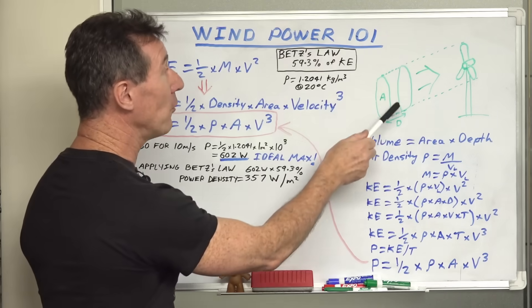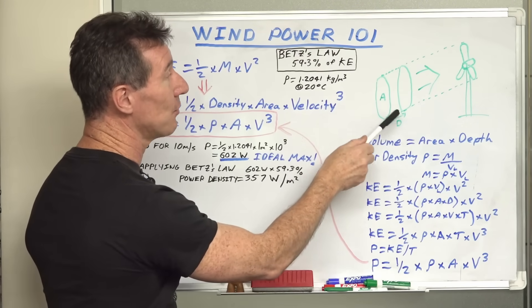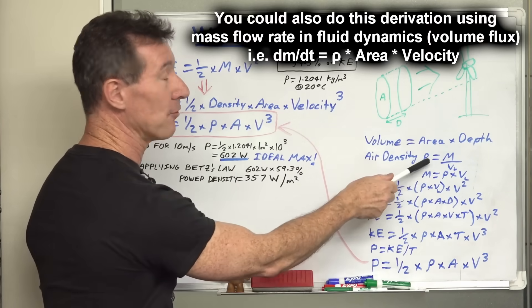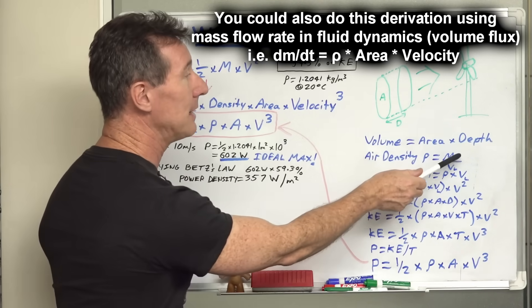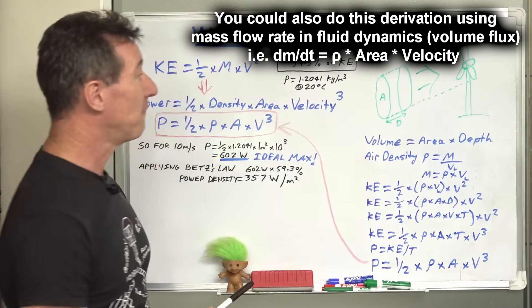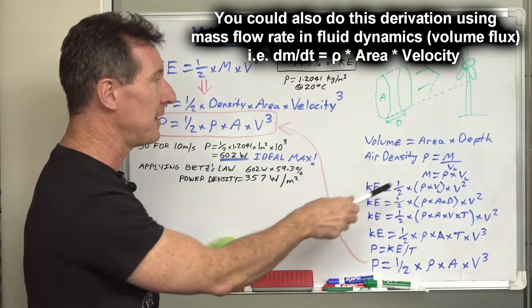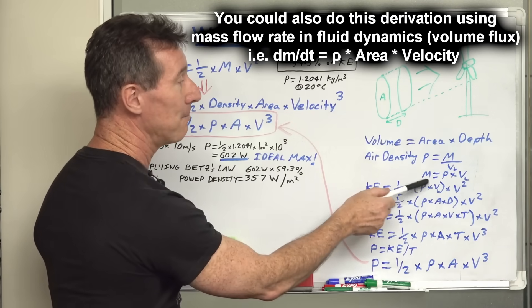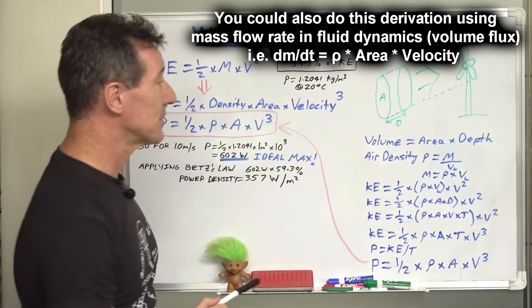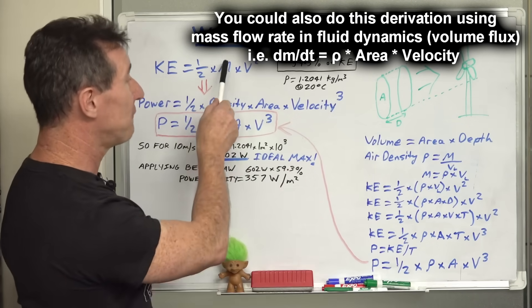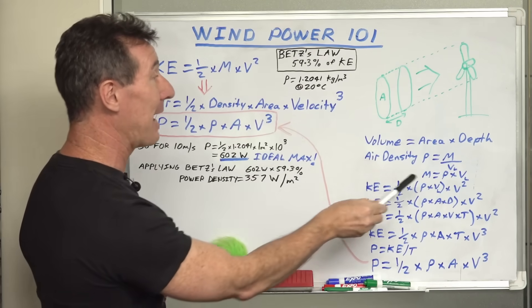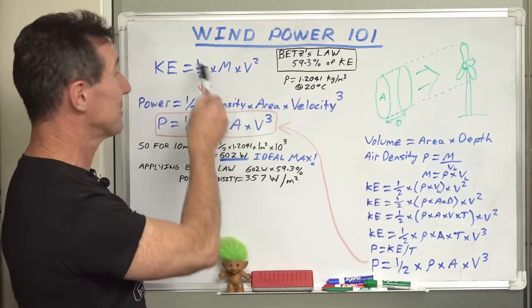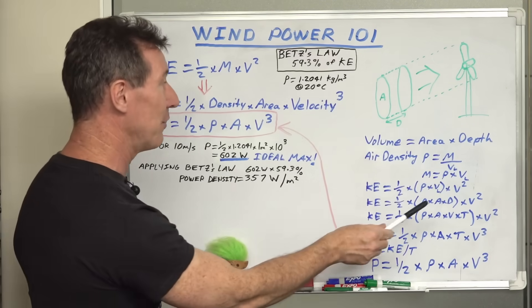The volume of air inside here is the area, square area, times the depth. And the air density is rho, that's not a P, that's actually the symbol rho, is the mass divided by the volume. I've got a volume VL there to differentiate it from velocity which is V. So we can just rearrange that. Mass equals rho times the volume. Now we can take our kinetic energy formula, and instead of having the mass, we can substitute in rho times the volume times V squared. It's the same formula, we've just substituted in some equivalent stuff.